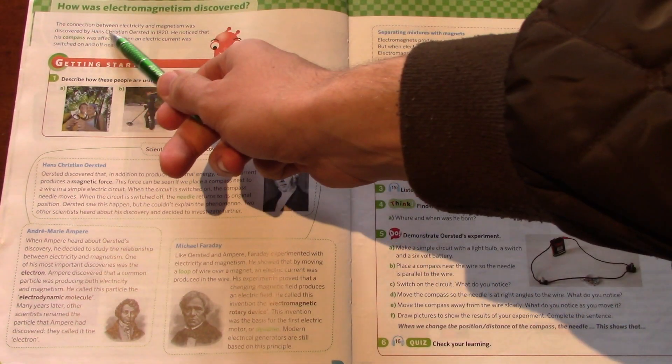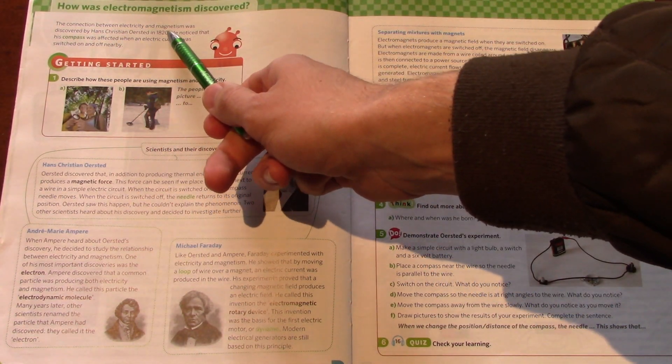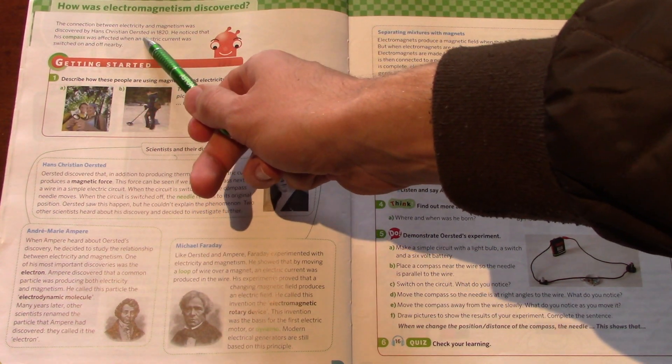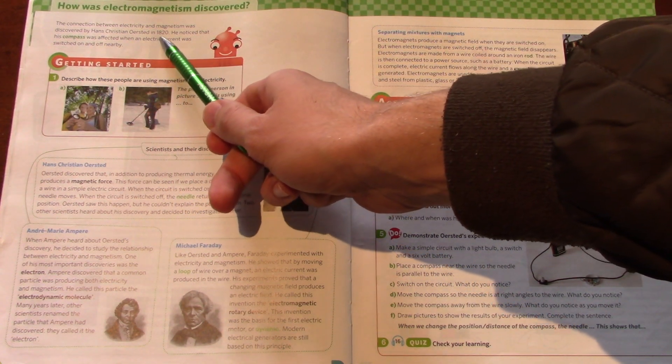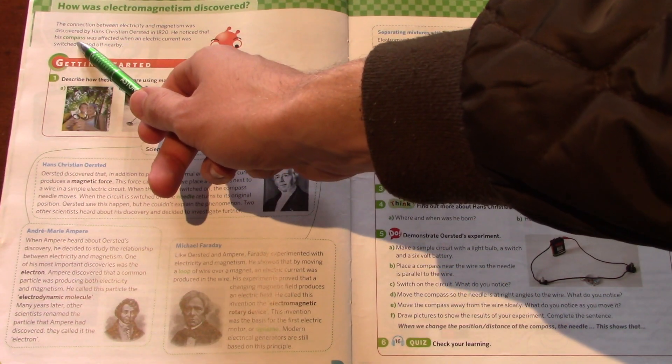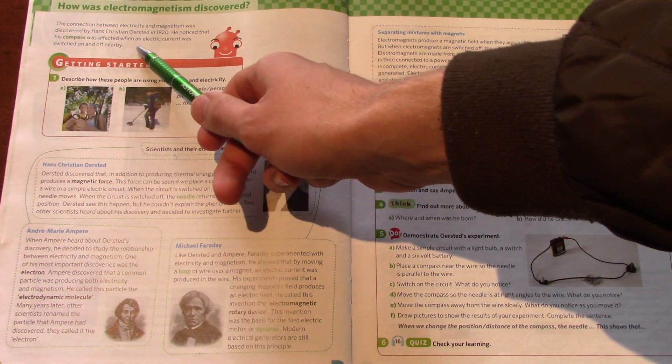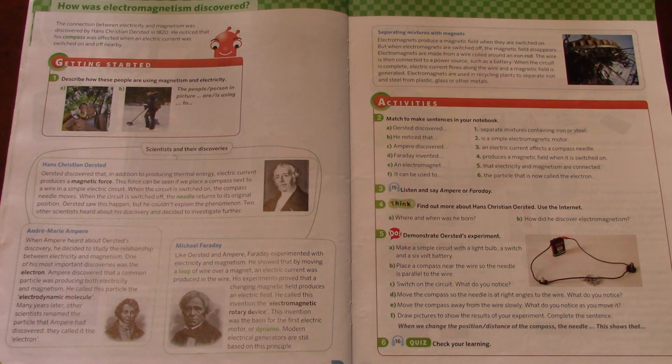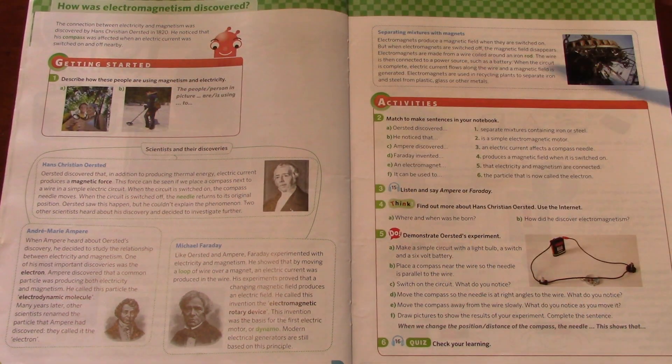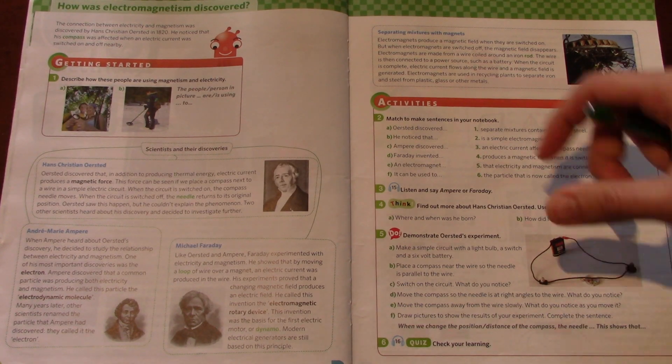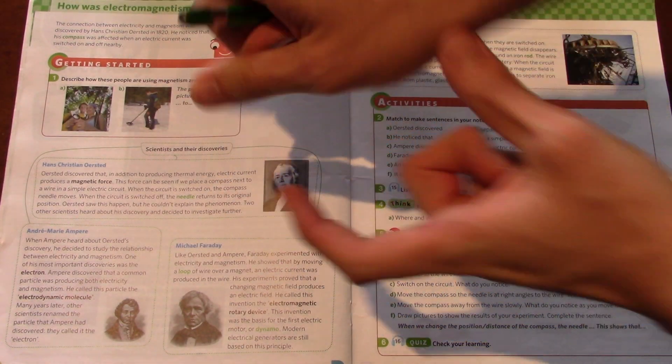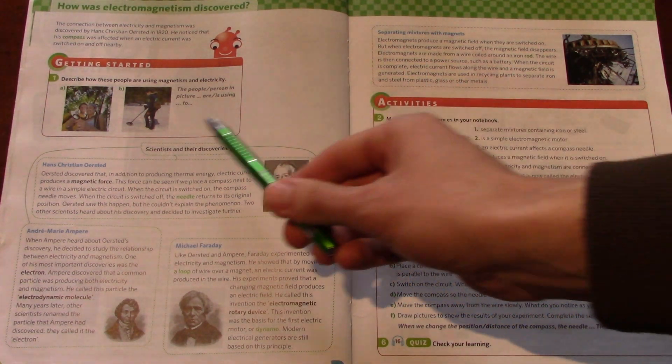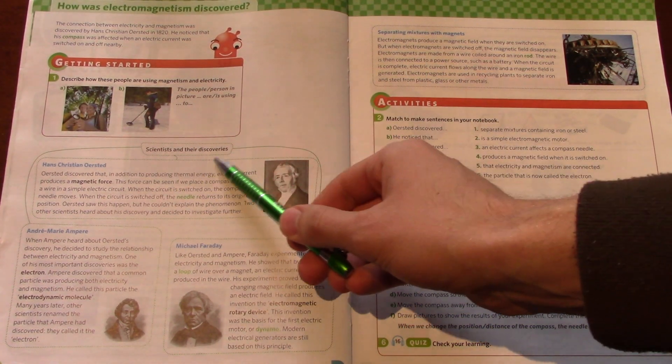The connection between electricity and magnetism was discovered by Hans Christian Ørsted in 1820. He noticed that his compass was affected when an electric current was switched on and off nearby. What is a compass? A compass is the little device that has the arrow that points north. So, scientists and their discoveries.